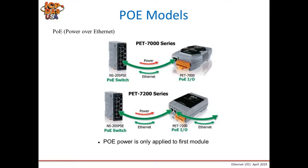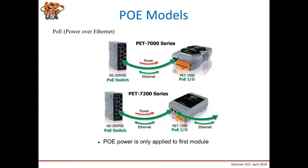This slide shows the Power over Ethernet feature. Note that the part number must include the P — as in PET — to have this feature. With PoE, Ethernet and power are passed through the Category 5 cable so you can power the module without additional power wiring, which is great for large applications to save on wiring costs. For the 7200 series, only the first module receives Power over Ethernet — only Ethernet data is passed through to the second port. So if you daisy chain multiple PET-7200 modules, you will need to separately power the additional devices.